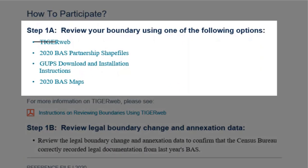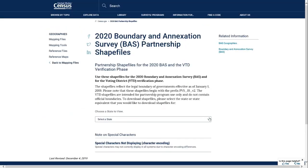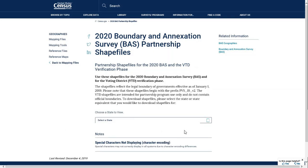Participants who prefer not to use TigerWeb may choose from a few other tools to review their boundaries. The Census Bureau provides bundled partnership shapefiles for experienced GIS users who prefer to review their boundaries within their own GIS software. Participants who opt for this method will use the Census Bureau's File Transfer Protocol, or FTP, site to download the shapefiles. To view the partnership shapefiles, select Partnership Shapefiles. This webpage is updated every year prior to the beginning of BAS in early January. For example, for the 2021 BAS, the Census Bureau will provide 2021 BAS partnership shapefiles.